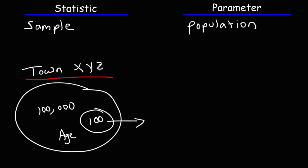The average age of those 100 individuals would be the sample mean — that is a statistic. The true average age of all 100,000 residents of town XYZ would be the population mean — that's a parameter. So the sample is a small subset of the population: 100 individuals out of the population of 100,000.